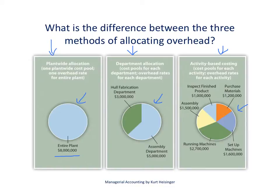Using a plant-wide allocation approach, we simply come up with one predetermined overhead rate for the entire plant and use that rate to allocate overhead to products. In the department allocation approach, we use a predetermined overhead rate for each department. Now with activity-based costing — the third box — we have five different activities, and though they add up to $8 million dollars, we allocate overhead to products based on the use of these activities in the production process.